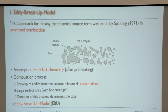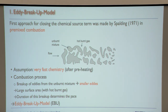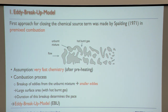One historical model still often used is the eddy breakup model by Spalding, which was developed for spark ignition engines and is a model for premixed combustion. It served as a prototype for other very similar models. The idea is that turbulence creates flame surface, and that leads to faster burning.